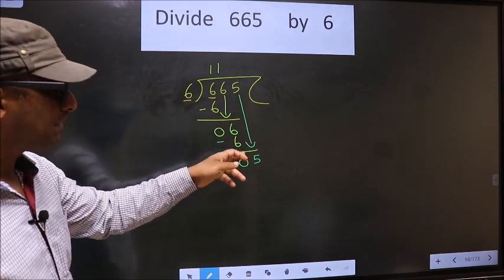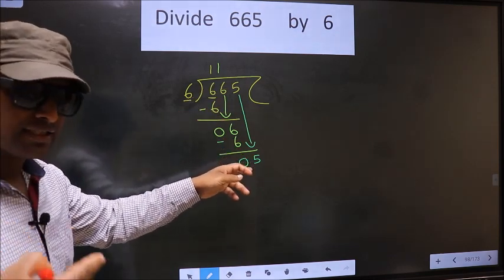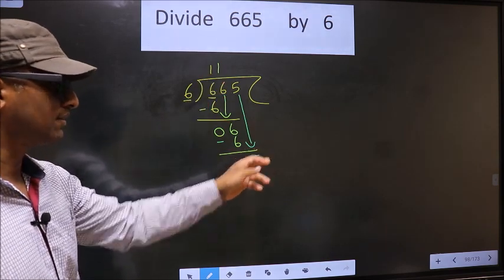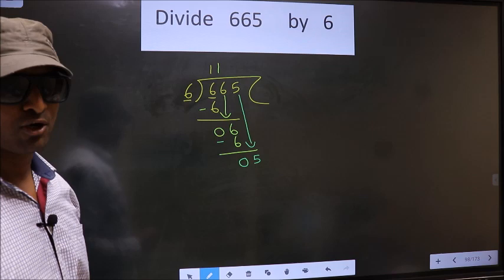Just now you brought the number down, and in the same step you want to put a dot and take 0 here, which is wrong.